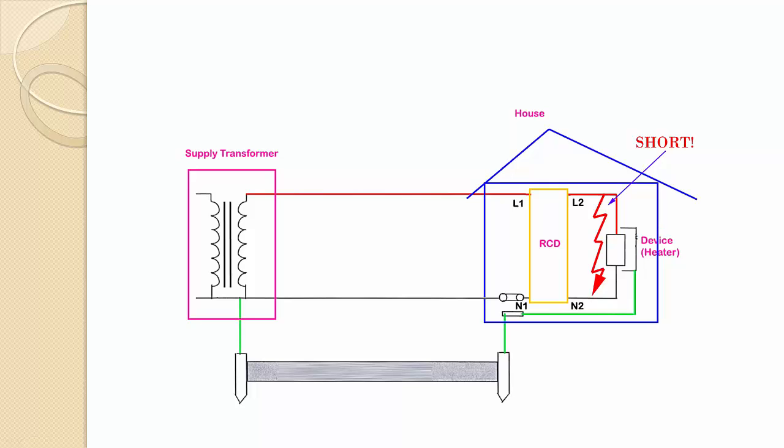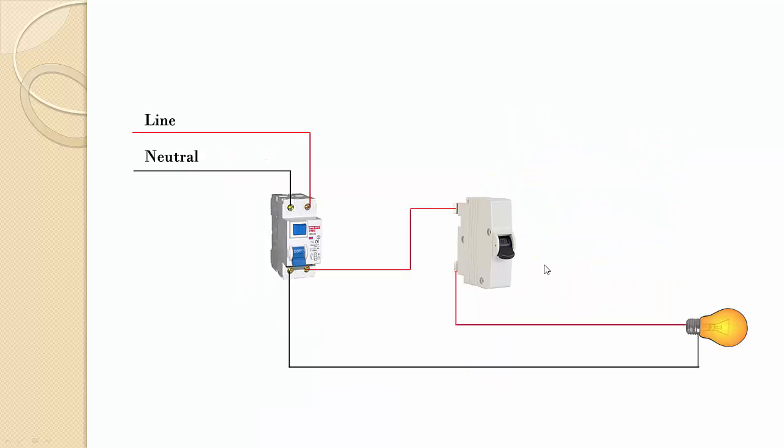So here there are two options for us. One option is to connect a circuit breaker in series to the RCD in the line, which will protect the circuit in case of a short circuit, whereas RCD will protect from earth faults.